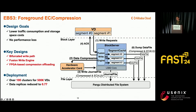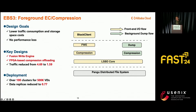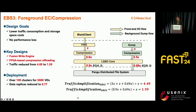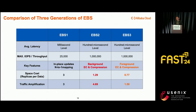EBS3 offers comparable performance to EBS2. At the end of the day, what have we achieved? The journal file contributes 0.9x traffic amplification, and the background dump contributes 0.69x. In total, traffic amplification has dropped from 4.69x to 1.59x. This slide presents a comparison of the three generations of EBS in terms of performance, space cost, and traffic amplification. With each generation, EBS3 experiences significant improvements in performance accompanied by substantial reductions in space cost and traffic amplification.